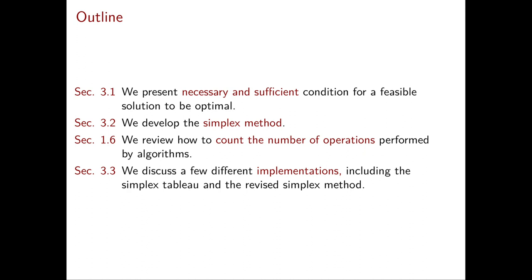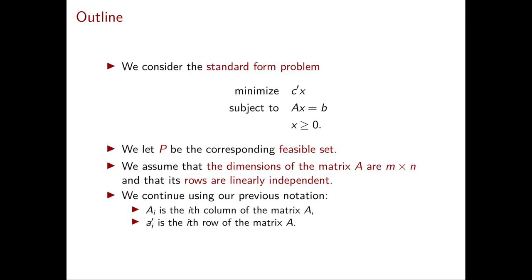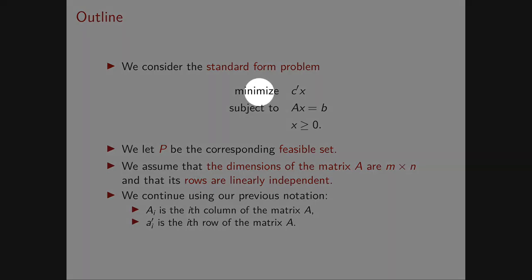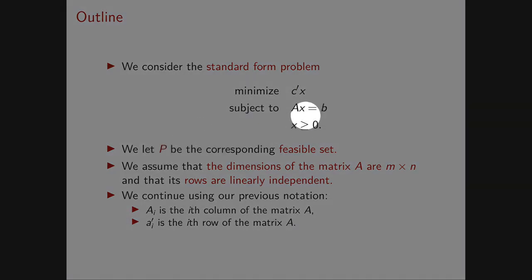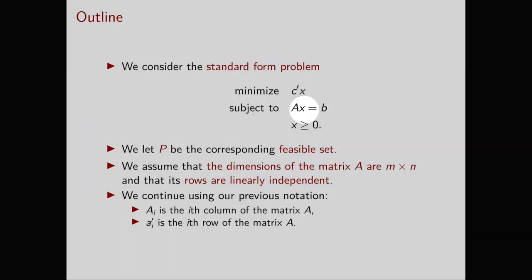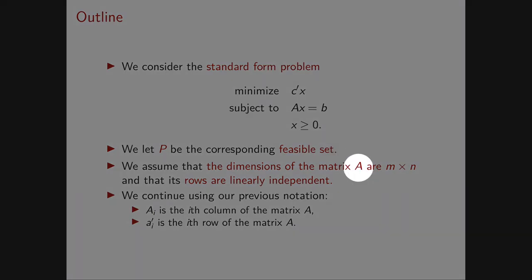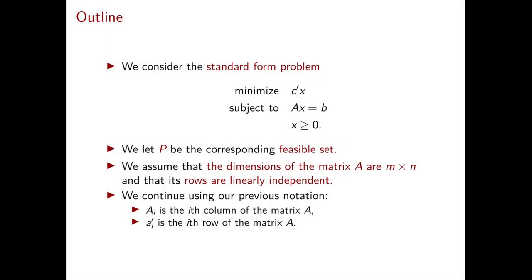In particular, we will see the simplex tableau and the revised simplex method. In order to correctly estimate the number of operations performed by the different implementations, we also review section 1.6. Now let's start with some notation that we will always be using in chapter 3. We will always consider standard form problems: minimize C transpose X subject to AX equal to B and X greater than or equal to 0. We use capital P to denote the corresponding polyhedron. We assume the dimension of A is M times N, so we have M equality constraints and N variables, and we assume the rows of A are linearly independent.